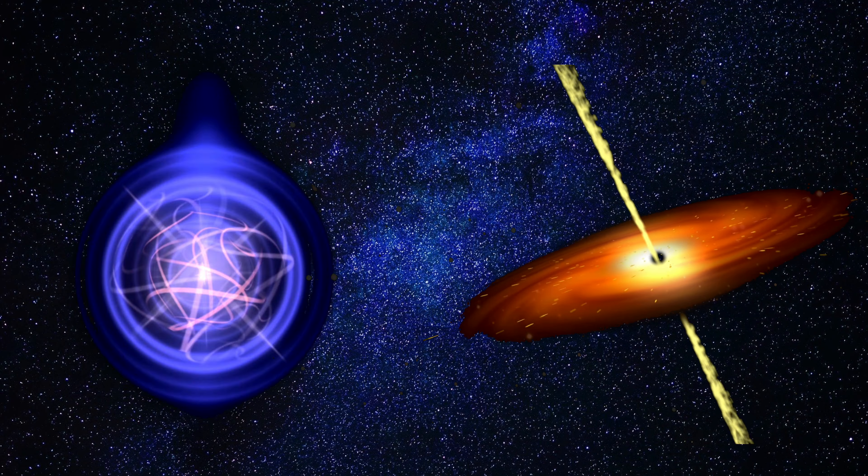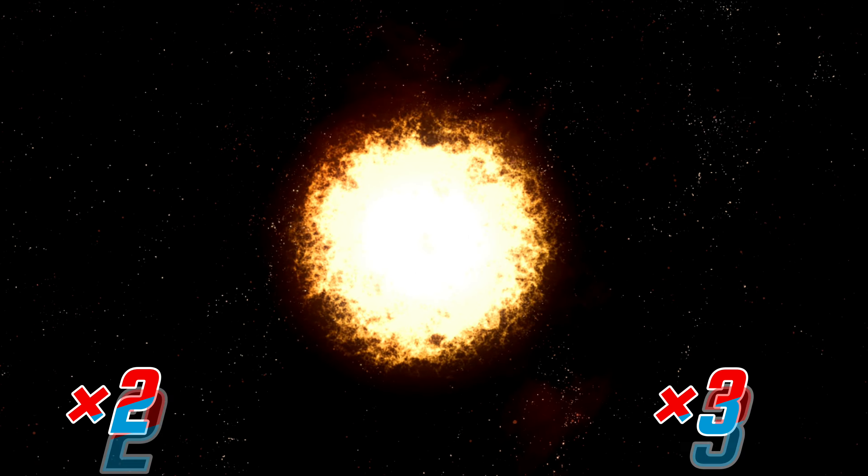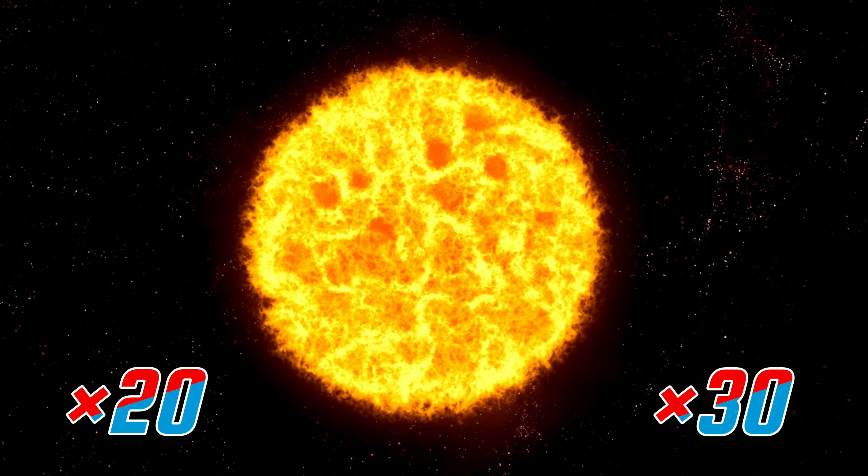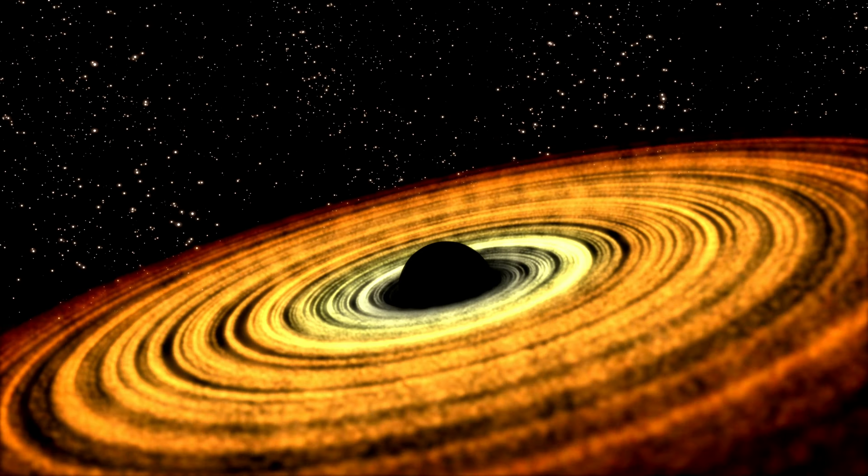When its fuel ends, now will it form a black hole or a neutron star? This depends on its size. If the star is at least 20 to 30 times more massive than our sun, it will collapse in its own gravity and hence give birth to a black hole.